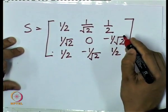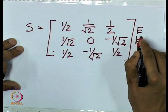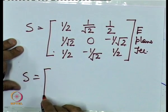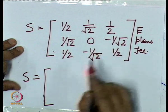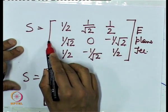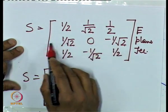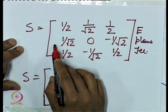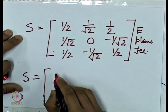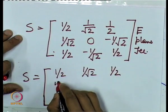This is the S-parameter matrix for an E-plane T. The S-parameter matrix for an H-plane T will be similar except that the negative signs would not be present. The presence of the negative sign in the E-plane T matrix shows that the phase shift between ports 1 and 3 for power entering port 2 is 180 degrees. For an H-plane T, the matrix is exactly the same but without those negative signs.